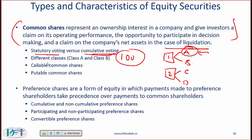There can be different classes of shares — Class A shares, Class B shares — where voting rights might differ across classes. Callable common shares means the company that issues the shares has the right to call the shares back at a given price. Putable common shares gives the shareholder the right to return the shares to the company at a given price.